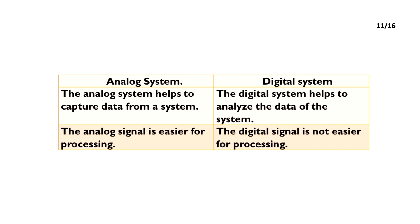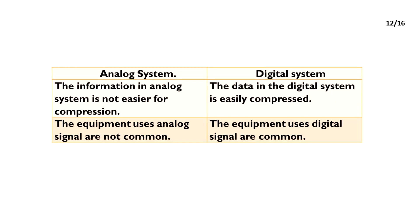The analog system helps to capture data from the system. The digital system helps to analyze the data of the system. The analog signal is easier for processing. The digital signal is not easier for processing. The information in the analog system is not easily compressed. The data in the digital system is easily compressed.